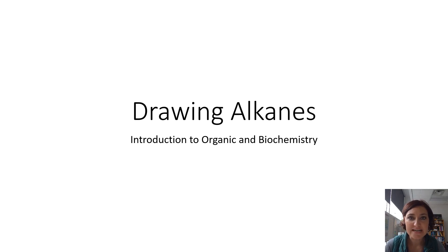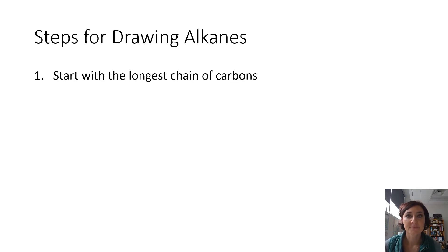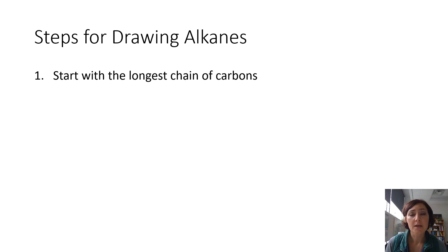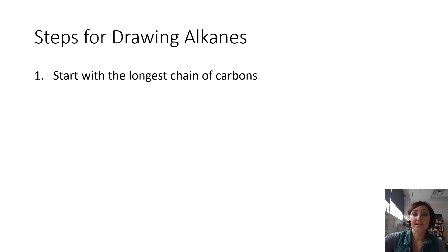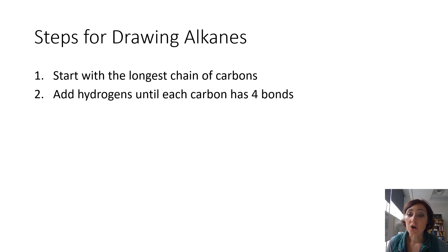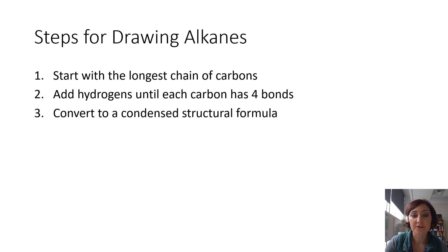Now that you have a good idea of how to name alkanes, we are going to flip the tables and start with the name of an alkane and learn how to draw those alkanes in a condensed structural formula. Our steps for drawing alkanes are pretty simple: start with the longest chain of carbons — I like to put it horizontally on the paper with branches coming off above or below — then add hydrogens to each carbon until it has a maximum of four bonds or eight valence electrons shared. Then convert to a condensed structural formula.